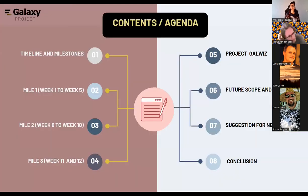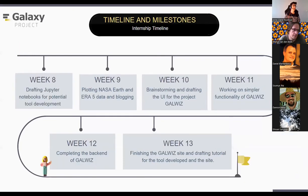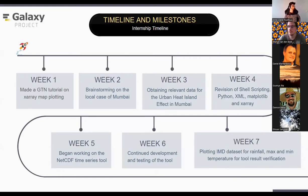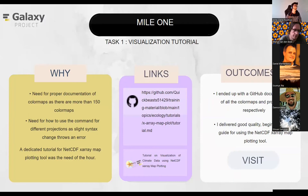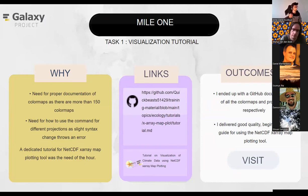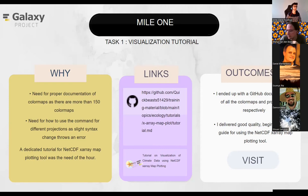The internship is organized into three milestones. Mile 1 covers weeks 1 to 5, Mile 2 covers weeks 6 to 10, and Mile 3 covers the last two weeks. In week one, I drafted a Galaxy Training Network tutorial for the NetCDF X-Array Map Plotting Tool. The reason is that there are more than 150 color maps and different syntaxes for projections, which make choosing the perfect plot very overwhelming. The tutorial is a step-by-step guide on how to use the tool along with color map and projection documentation. It will be available on the Galaxy Training Network site under the Ecology section once the pull request merges.